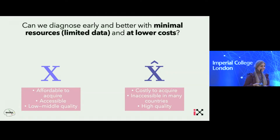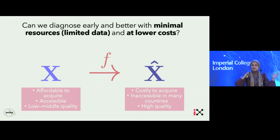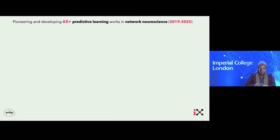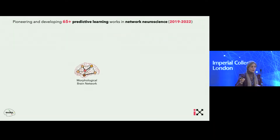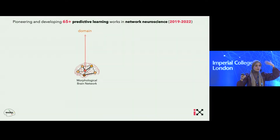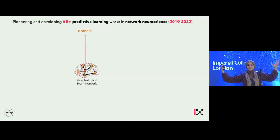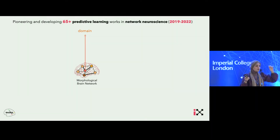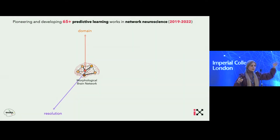How can we do that? We're designing an AI model — it could be any kind of fancy neural network — that is able to solve this, going from data to no data. We have published several works along these directions over the past three years. Starting from a relatively affordable brain graph encoded into a matrix, we aim to predict its evolution across multiple costly domains — like predicting functional connectivity that requires resting state functional MRI — and predicting the graph directly while circumventing the need to acquire the real data, at different scales and across time.